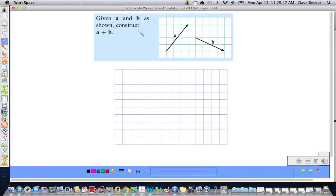Okay. Given A and B as shown, construct A plus B. All right. Well, I'm going to go to my arrows here. And vector A is what? 3, 1, 2, 3, 4. So, I can start anywhere. I'll start down here.